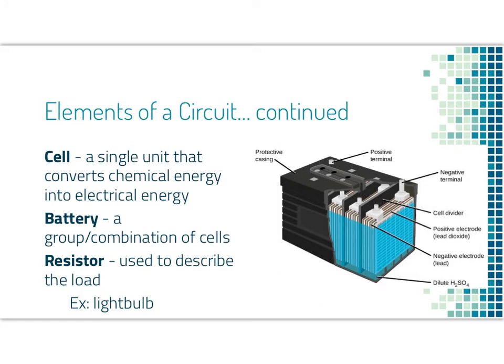Elements of a circuit. We have a cell versus a battery. A cell is a single unit that converts chemical energy into electrical energy. So a cell is a very basic battery, if you will. So we've got like a car battery here. And what we see is that a battery, the whole thing, is a group or a combination of cells. So we have multiple cells within a battery. A cell is a positive and a negative. And a battery is at least two cells, if not more.